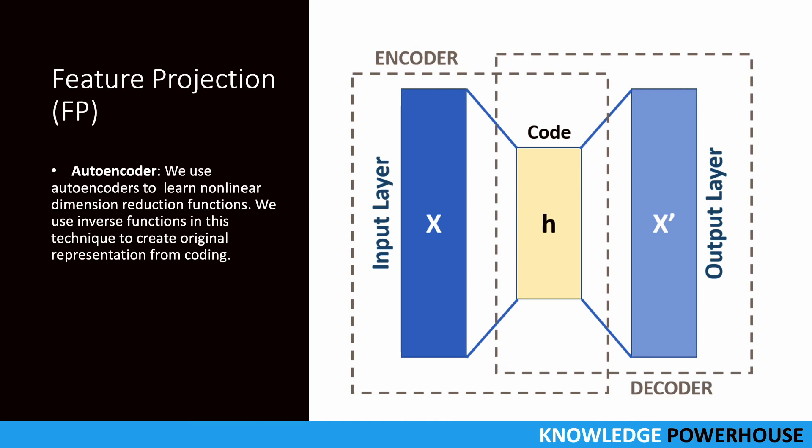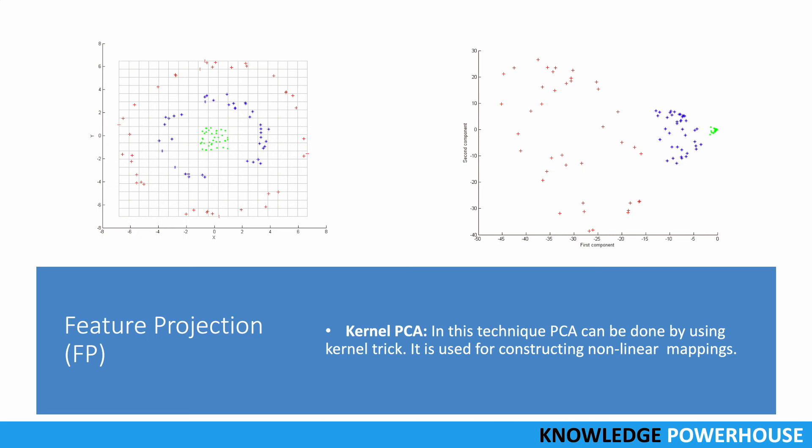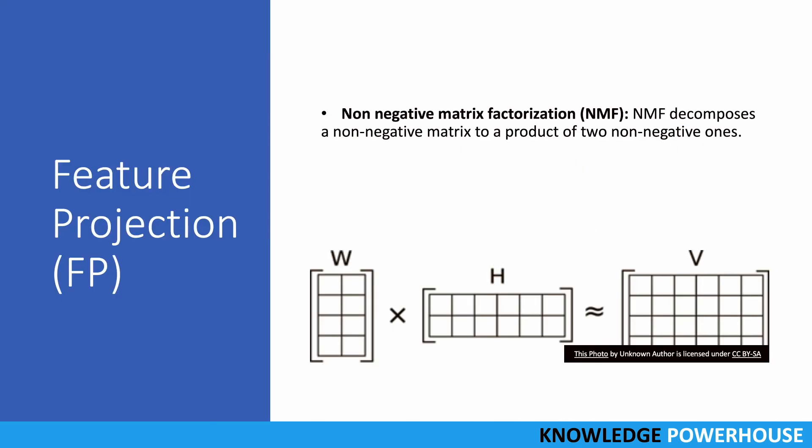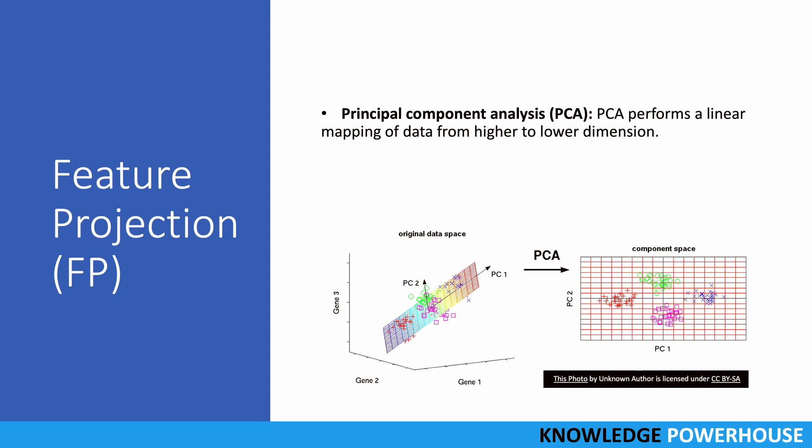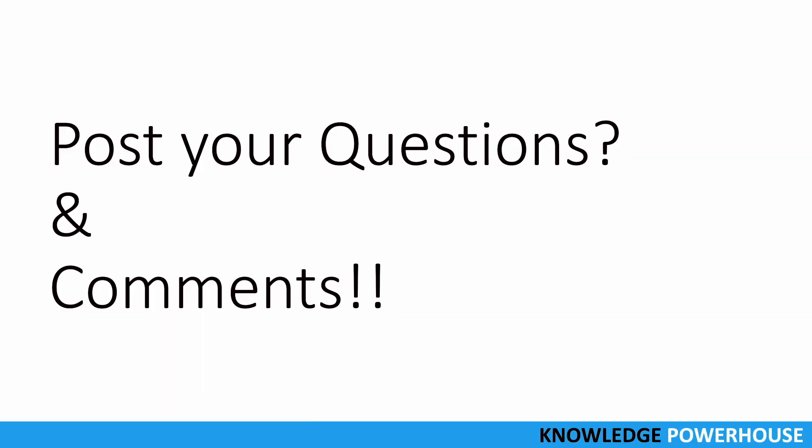So let's recap: the techniques are autoencoder, Kernel PCA, non-negative matrix factorization, and principal component analysis. That's all on this topic. If you have any other questions or feedback, do let us know in the comment section. If you want some new topic to be covered, let us know and we'll be happy to cover that in future topics.